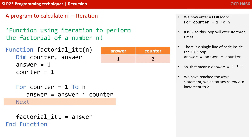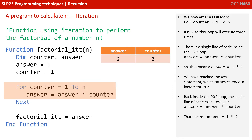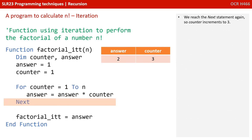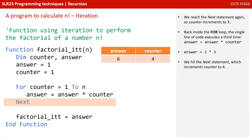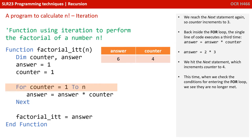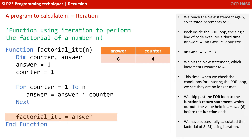We now enter a for loop: for counter equals 1 to n. Since n is 3, this loop will execute 3 times. The single line inside the loop is: answer equals answer times counter. First iteration: answer equals 1 times 1. Counter increments to 2, so answer equals 1 times 2. Counter increments to 3, so answer equals 2 times 3. Counter then increments to 4, the loop condition is no longer met, so we skip to the return statement, which outputs the value in answer — which is 6. We successfully calculated the factorial of 3 using an iterative for loop.